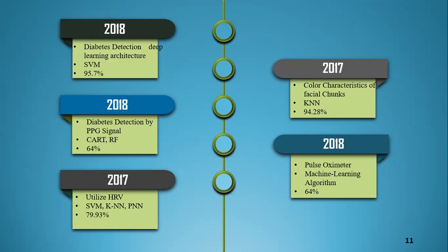Third, HRV — heart rate variability — detects diabetes using SVM, KNN, and PNN classifiers (support vector machine, K-nearest neighbor, and propagation neural network) and achieved 79.93% accuracy. Fourth, a non-invasive approach detects diabetes by color characterization of facial chunks using a KNN classifier and achieved 94.28% accuracy. Finally, diabetes detection by pulse oximeter uses a machine learning algorithm and achieved 64% accuracy.